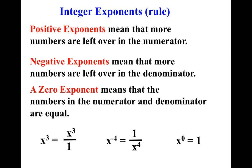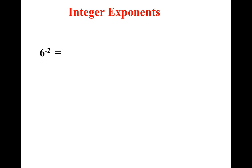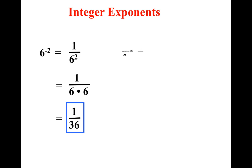Definitely write this down — these are the rules, and if you get them straight in your head, this is going to be the easiest chapter ever. So 6 to the negative second power: my base number is 6, and where are my 6s left over? In the denominator. And x to the negative fourth: my base number is x, where are my base numbers left over? In the denominator. And you're done.